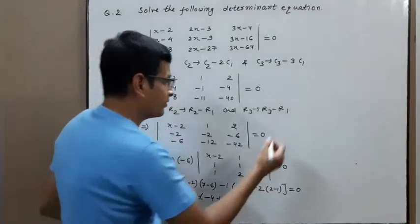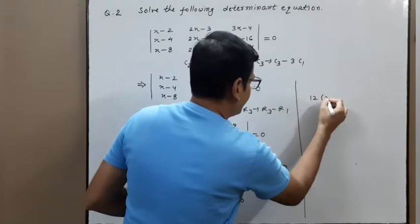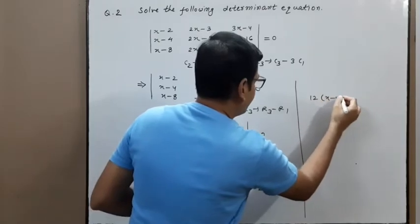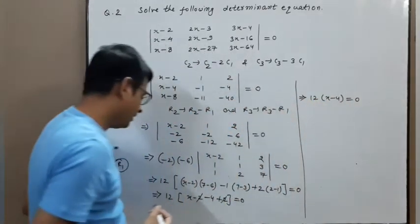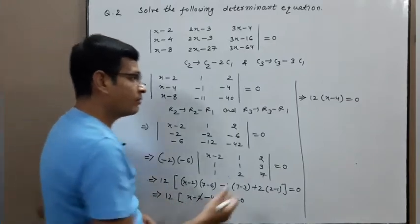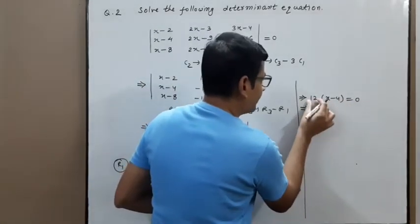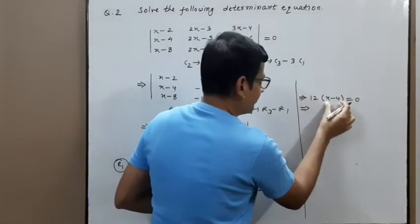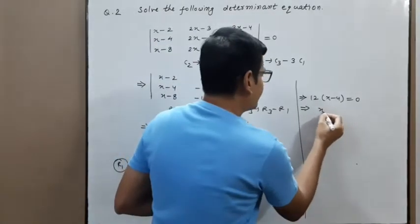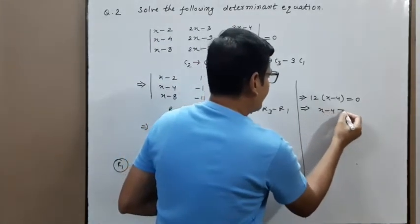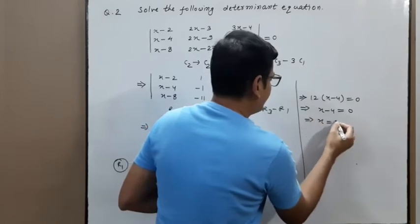So 12(x−4) = 0. Product of two numbers equals zero: either 12 = 0 or (x−4) = 0. Since 12 ≠ 0, it means x − 4 must be 0. Therefore x = 4.